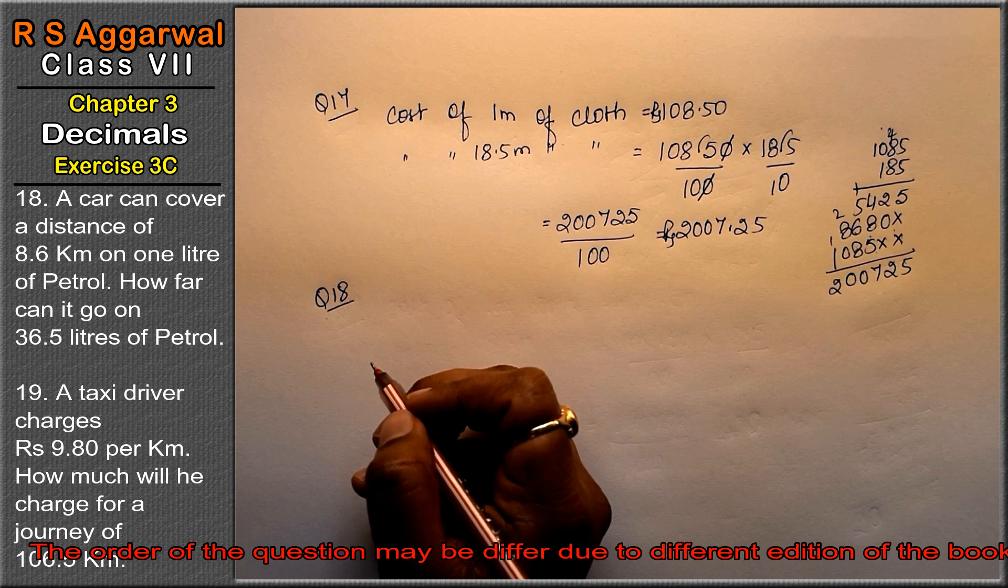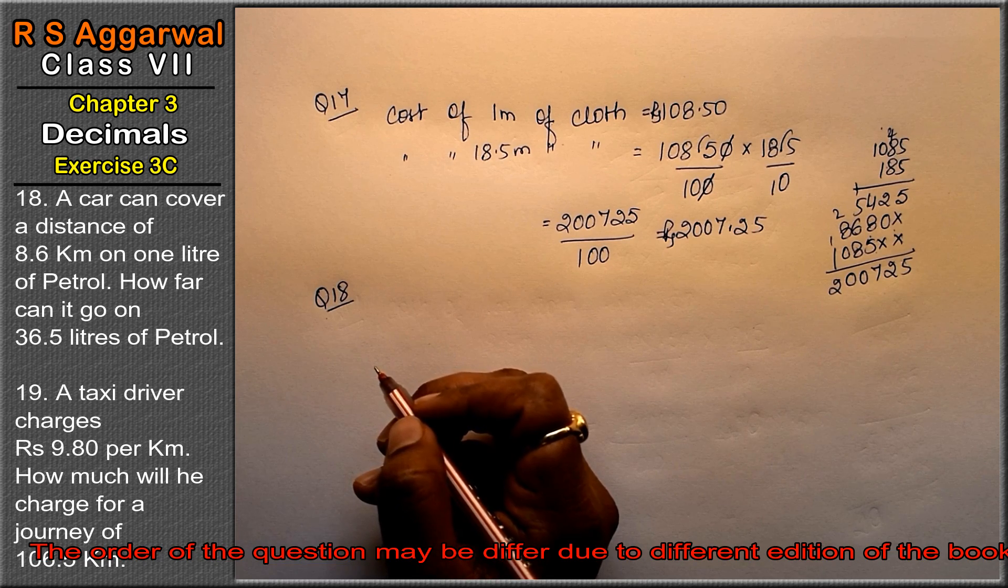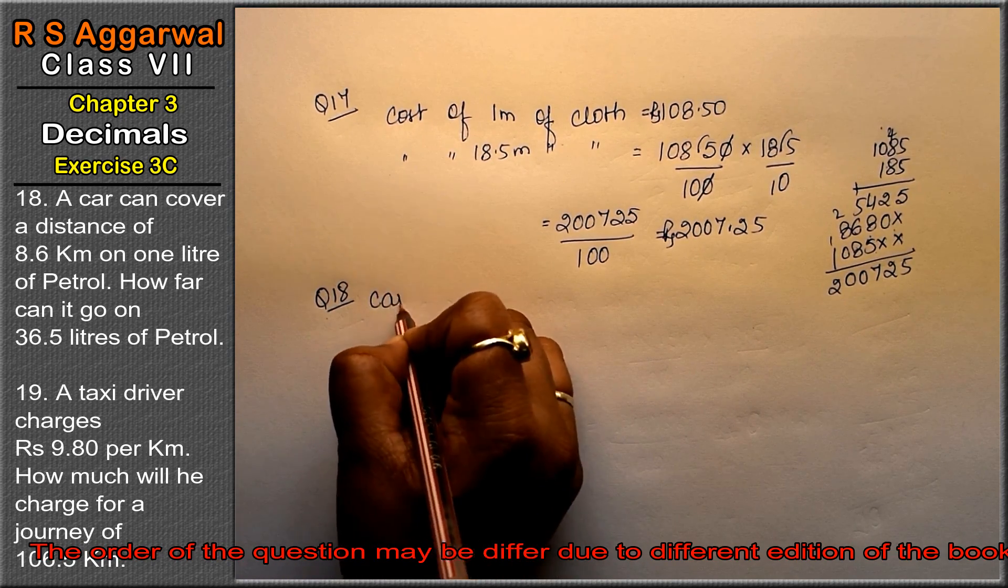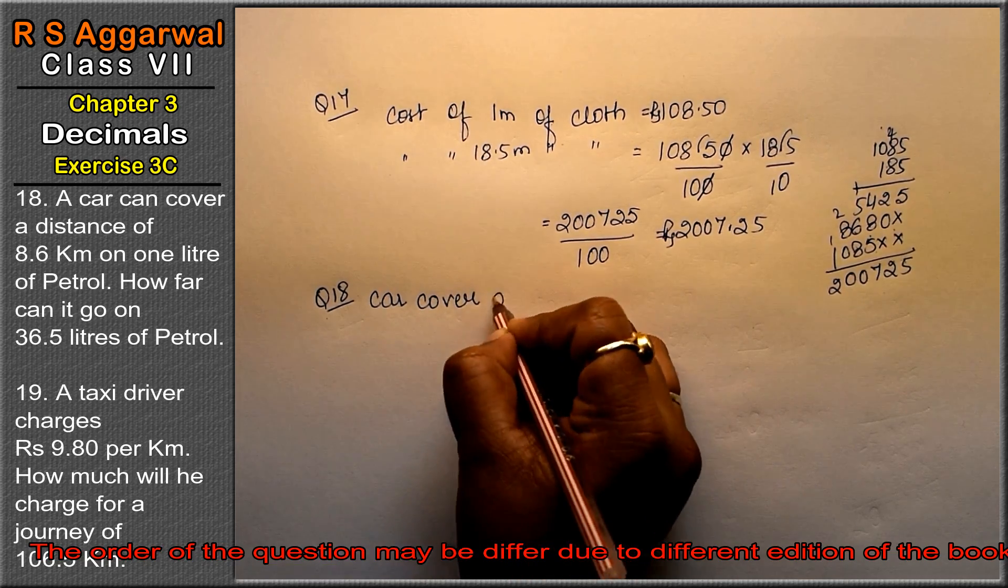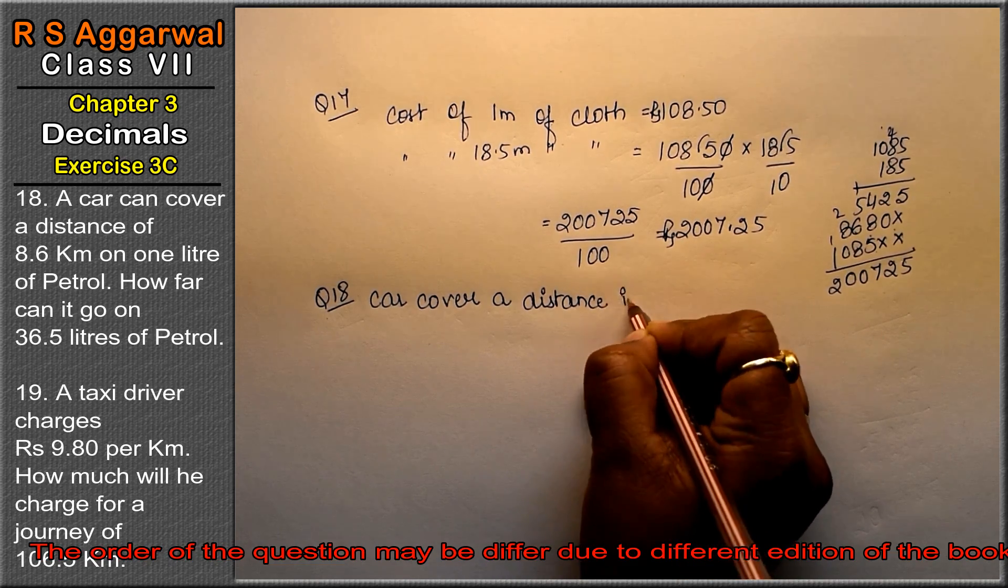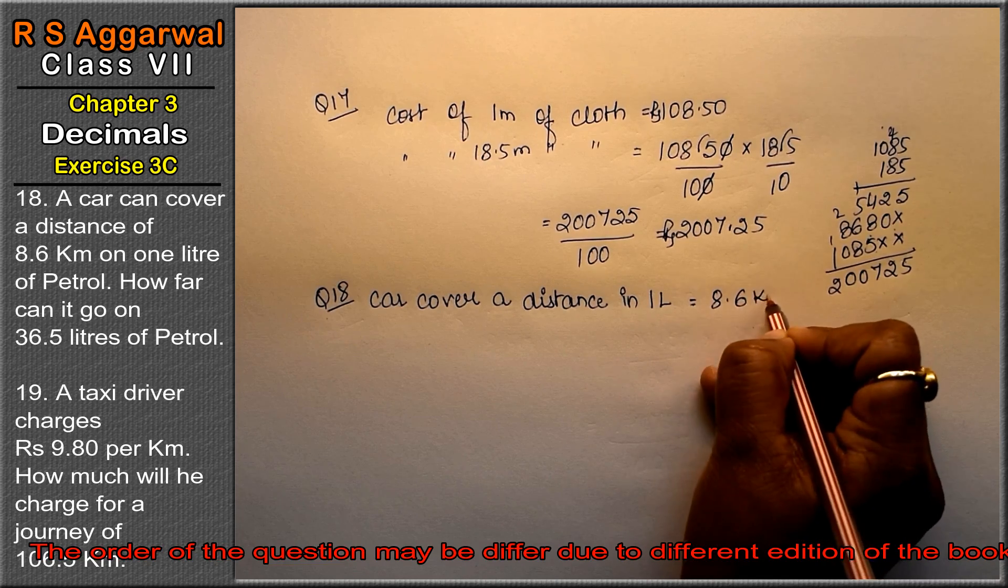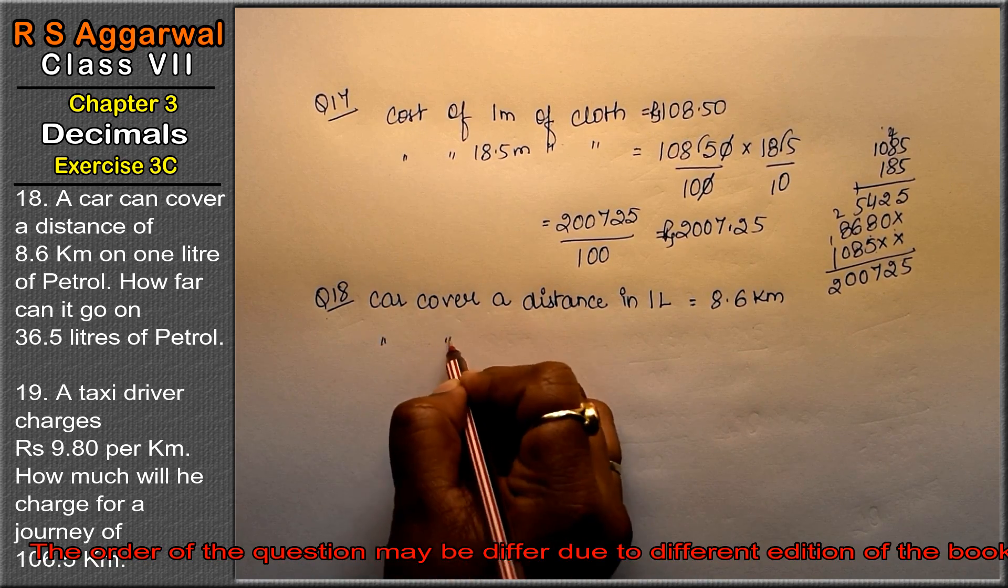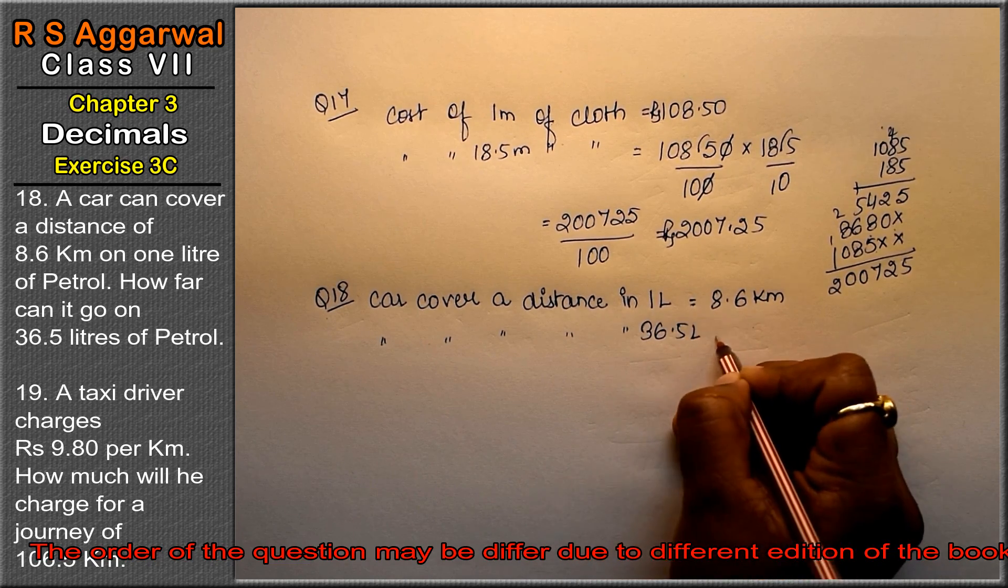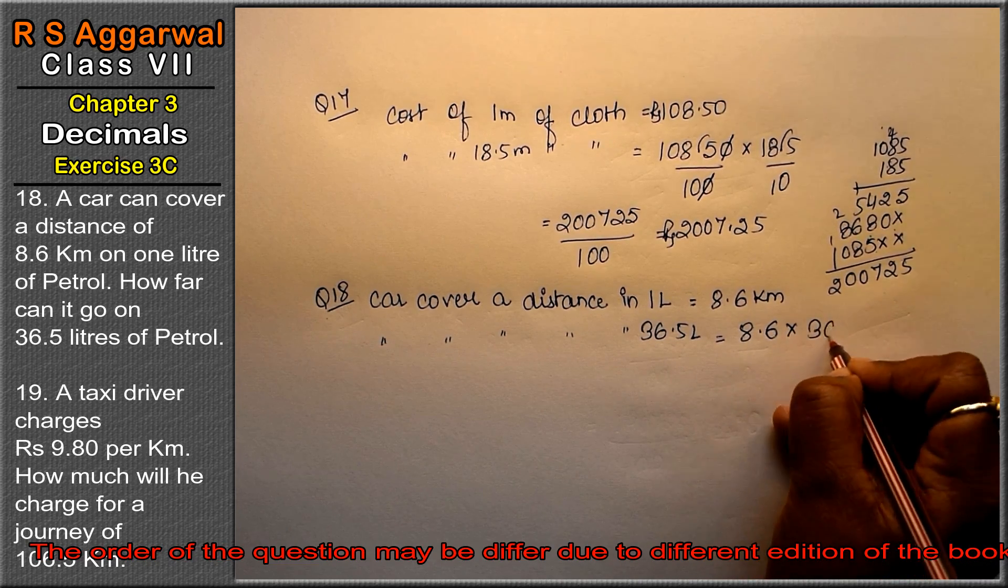Friends, in 1 liter the car covers a distance of 8.6 km. So in 36.5 liters of petrol, how much will it cover? Car covers a distance in 1 liter of petrol equal to 8.6 km. Then car covers a distance in 36.5 liters - one is given, more we need to find. So 8.6 times 36.5.